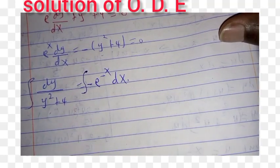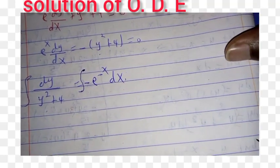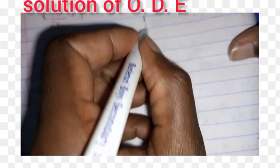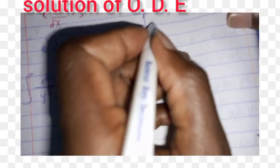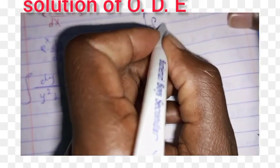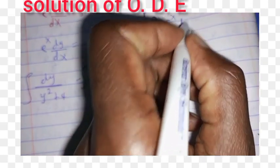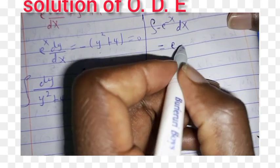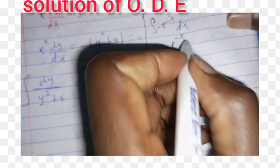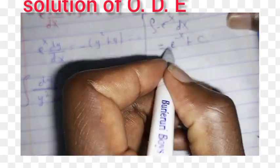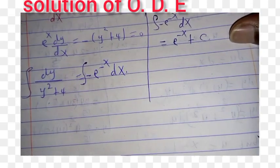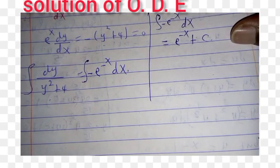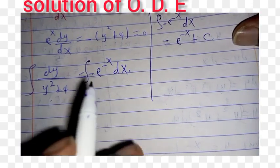Now integrate both sides. On the right-hand side, the integral of -e^(-x) dx gives us e^(-x) plus constant C.